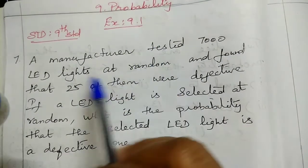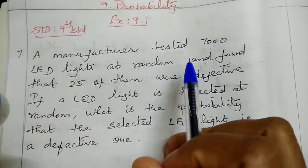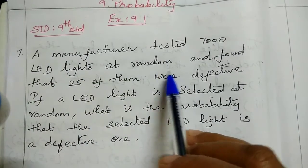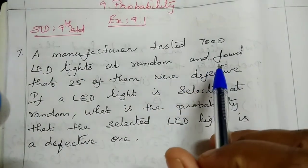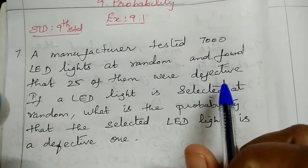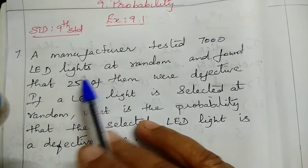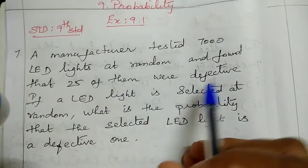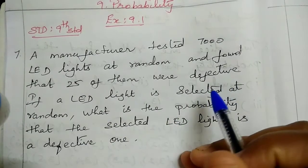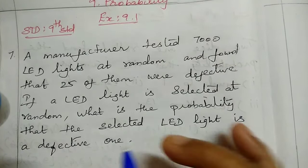Exercise 9.1, question 7. A manufacturer tested 7000 LED lights at random and found that 25 of them were defective. So we have 7000 LED lights total, with 25 lights defective.